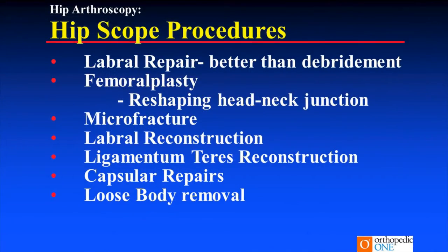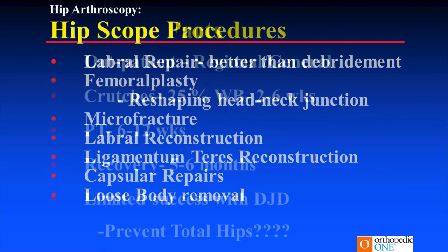Procedures we perform: labral repair, femoroplasty — reshaping the head and neck junction — microfracture when needed, labral reconstruction to replace a labrum that's not repairable, ligamentum teres reconstruction (rarely done — some believe it has a role in hip instability), capsular repairs for hip instability, and loose body removal.